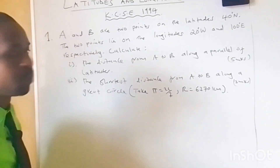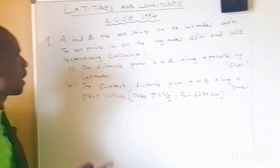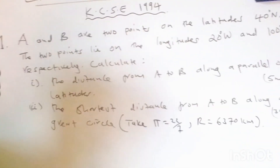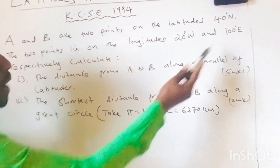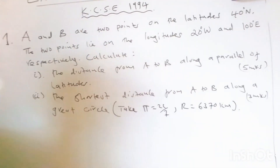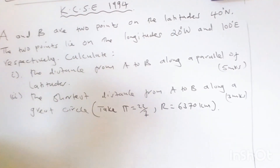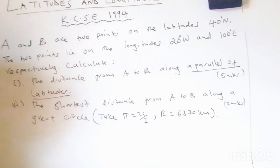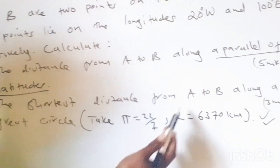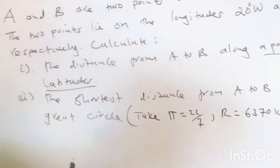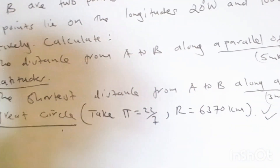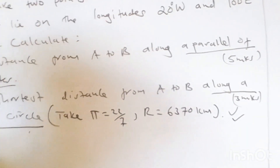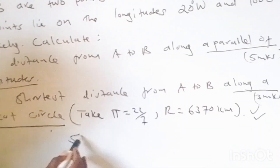The question says: A and B are two points on the latitude 40 degrees north. The two points lie on the longitudes 20 degrees west and 100 degrees east respectively. Calculate: (i) the distance from A to B along the parallel of latitude, and (ii) the shortest distance from A to B along the great circle. We are given pi as 22/7 and the radius of the earth as 6370 kilometers.